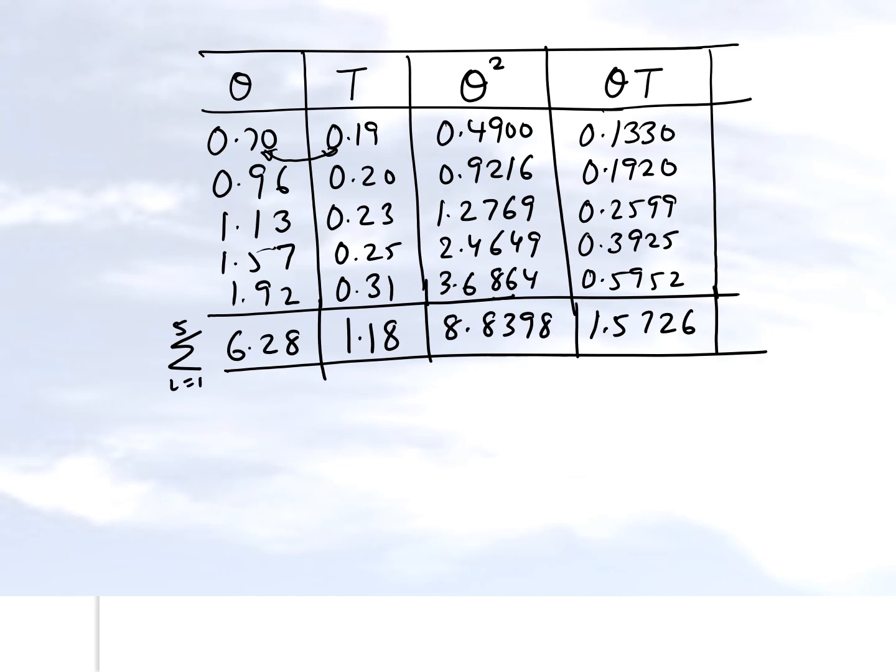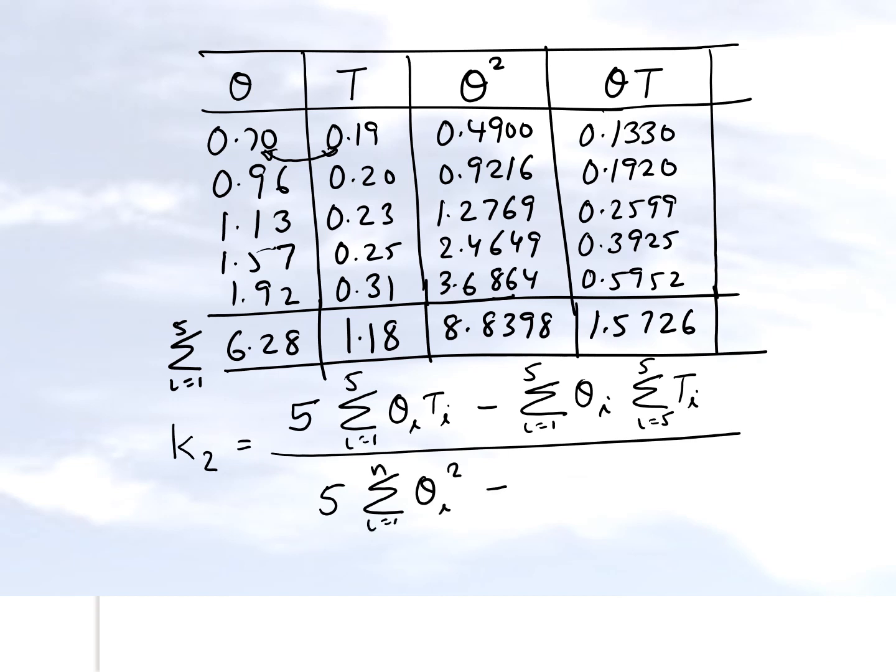So k2 is n summation—n is 5 in our case because we have five data points—so the summation of the theta i and T sub i values minus the summation of the five values of theta, the summation of theta, the summation of the torque. And we divide it by five times the summation of the theta square values, and then sum the theta i values and we square those. So that's what we have here.